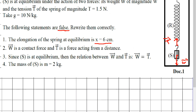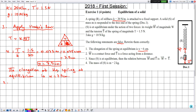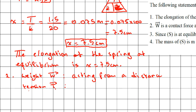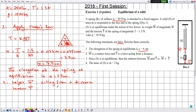Statement two says W is a contact force and T is a force acting from a distance — this is wrong. We know that the only forces acting at a distance are the weight W, the electric force, and the magnetic force. All other forces are contact forces, including the tension T. The correct statement is: W is a force acting from a distance and T is a contact force.